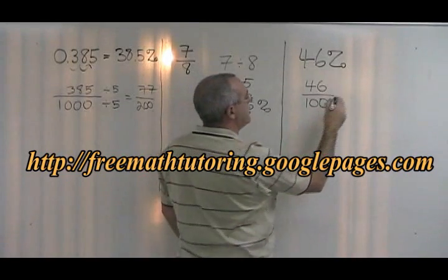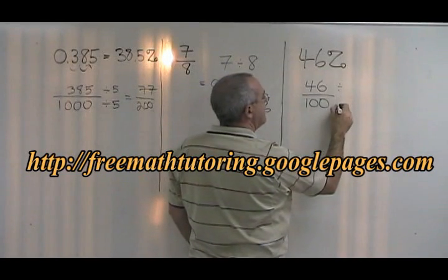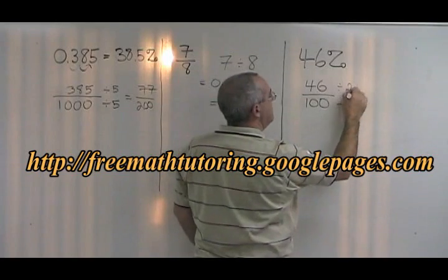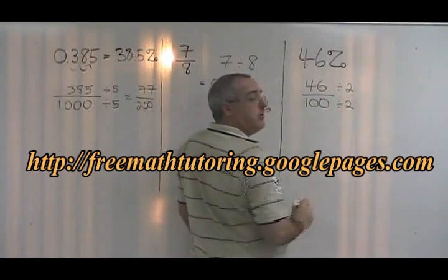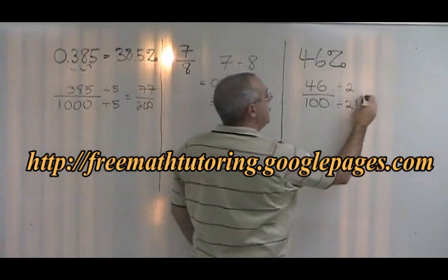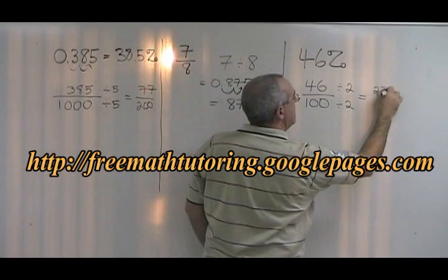If we reduce this fraction, we see that 46 and 100 have a common factor of 2, and we can divide both top and bottom by 2. We end up with 23 over 50. This fraction cannot be reduced, so it is our simplified answer.